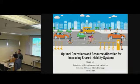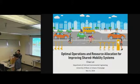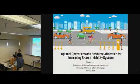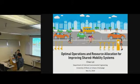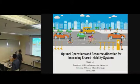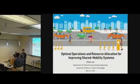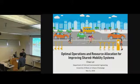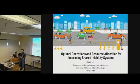I'm very pleased to introduce Dr. Li. He's a postdoctoral research associate working with Dr. Ouyang. He came here from Tsinghua University. He got his PhD at Tsinghua University in 2015 and Tongji University in Shanghai in 2009. He's been working with Dr. Ouyang, and his presentation today is about optimal operations and resource allocation for improving shared mobility systems. Dr. Li is also the coordinator of the Chinese-American Railway Transportation Joint Research Center. Let's welcome him for his presentation.